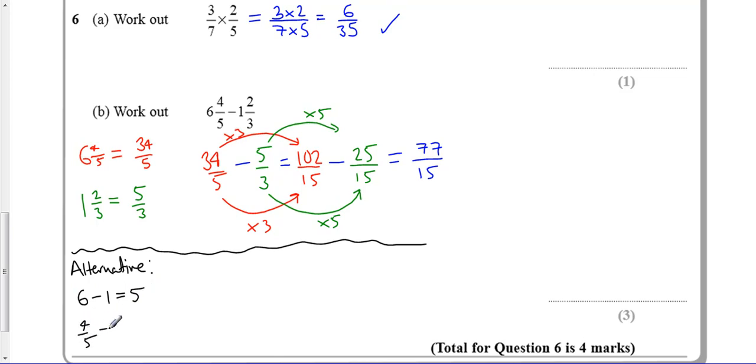And then I could do 4 fifths minus 2 thirds which again I've still got to convert to 15 anyway which is 12 fifteenths minus 10 fifteenths which gives us 2 fifteenths.